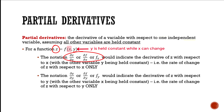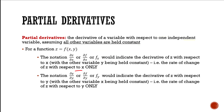So z would not be changing with respect to y; it would be changing with respect to x only. We also have the notation di z by di y, or di f by di y, or f sub y. Once again, these are all interchangeable notations. This would indicate the derivative of z with respect to y and y alone, assuming that the other variable x would be held constant. This would be the rate of change of z with respect to y only, assuming that x is being held constant.